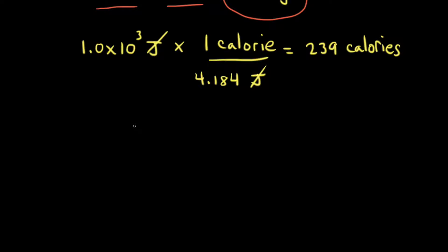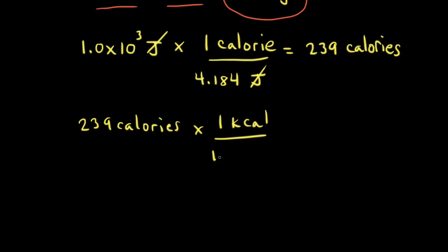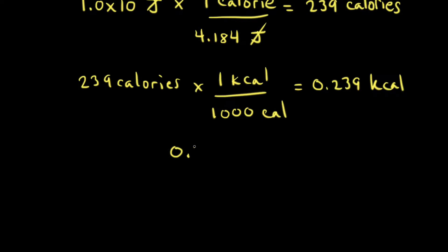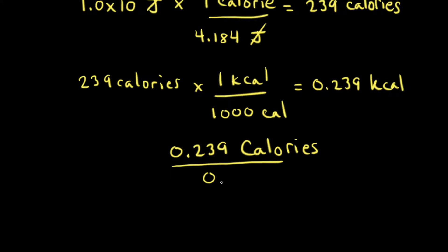Next, let's convert 239 calories (lowercase c) into food calories. Taking 239 calories and multiplying by the conversion factor of 1 kilocalorie per 1000 calories gives us 0.239 kilocalories. Since 1 kilocalorie equals 1 food calorie (capital C), we have 0.239 food Calories. To find the energy content in Calories per gram, we divide by the 0.08 grams of marshmallow that was burned during combustion, giving us approximately 3 Calories per gram of marshmallow.